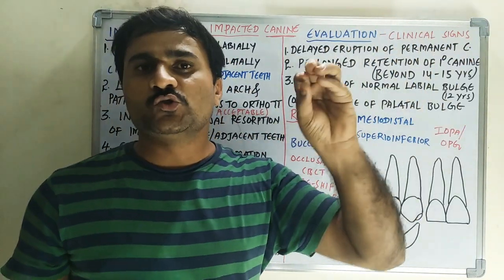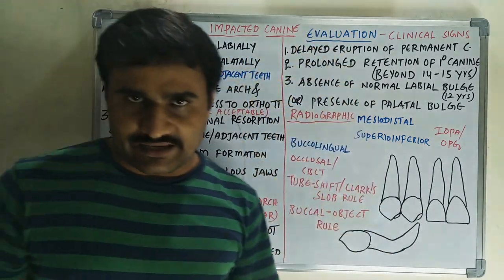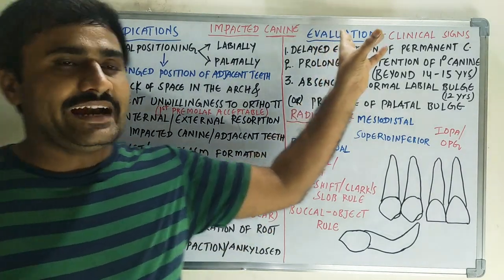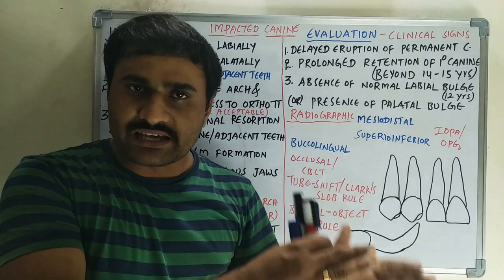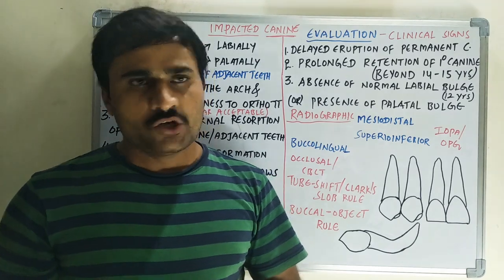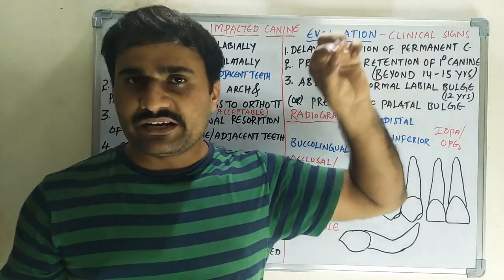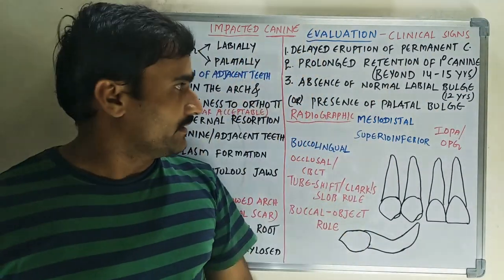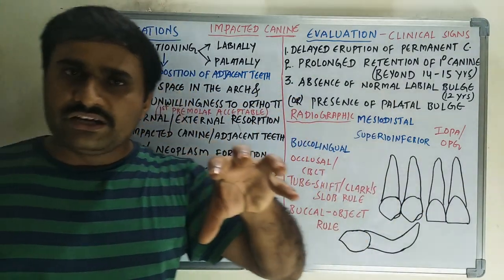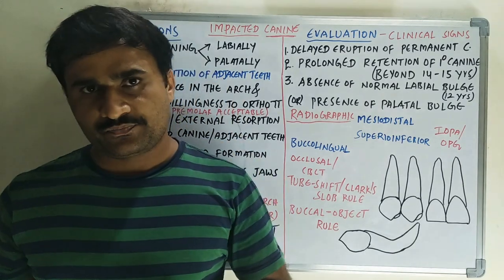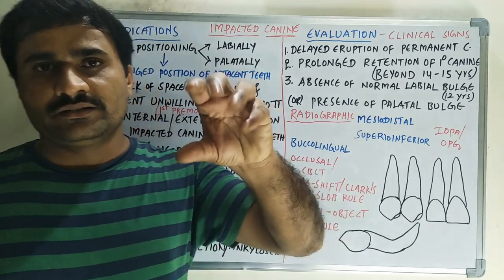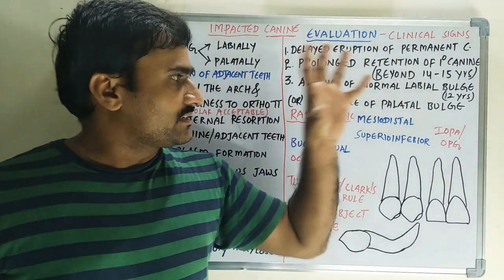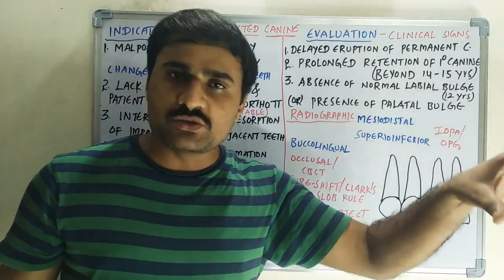Now we will discuss evaluation — how to plan treatment options for impacted canines. Clinical signs include: first, delayed eruption of the canine (normal eruption timing is 11–13 years); or prolonged retention of the primary canine beyond 14–15 years, which should raise suspicion. Second, absence of normal labial bulge — normally by 12 years you can see a labial bulge from the canine. If this bulge is absent or present on the palatal side instead, impacted canine should be suspected.